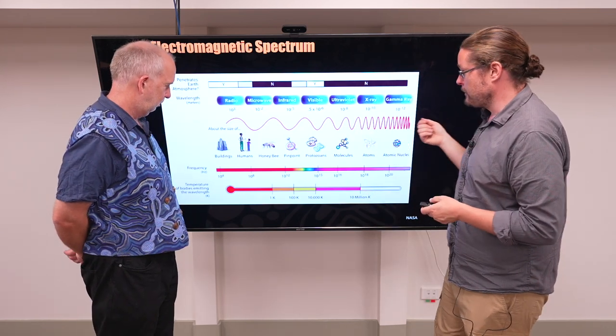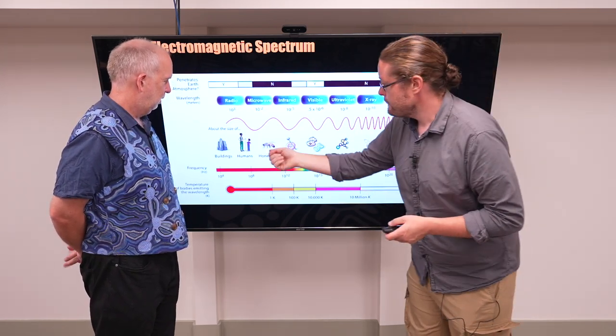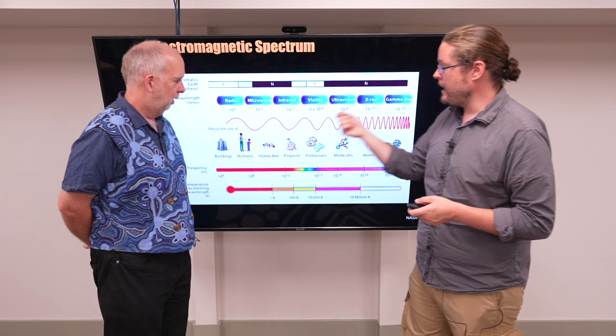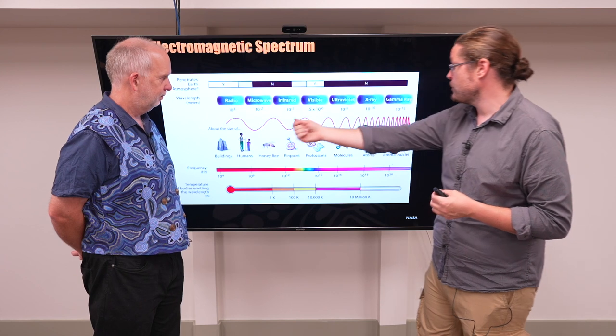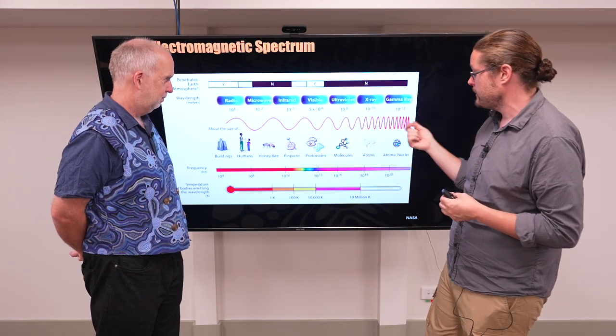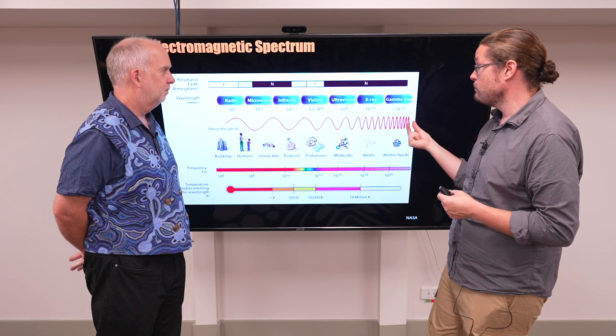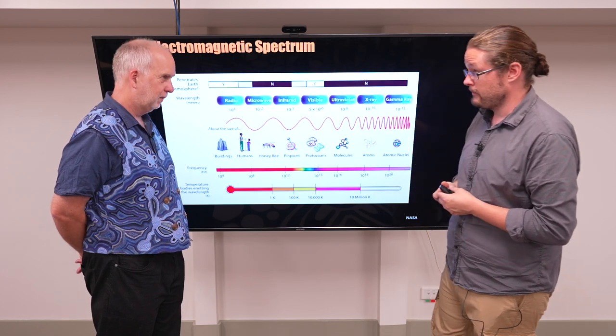So light, as we've talked about earlier, is a wave, and the wavelength changes depending on the type of color. So as you go to what we call the shorter wavelengths, the wavelengths get shorter. It also means that there's more energy in these wavelengths.